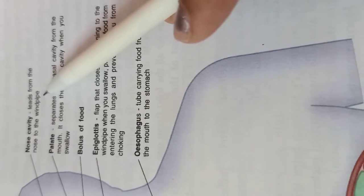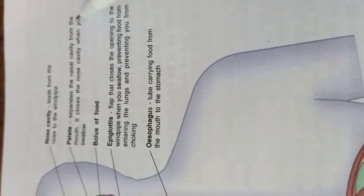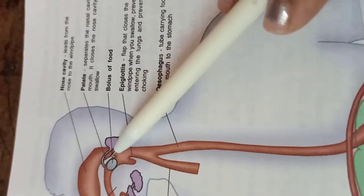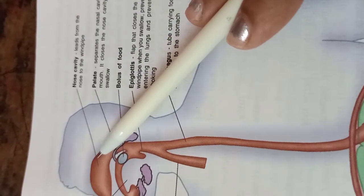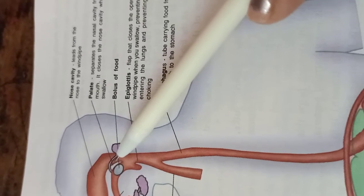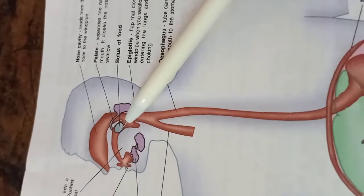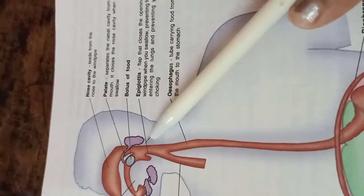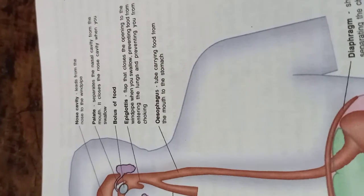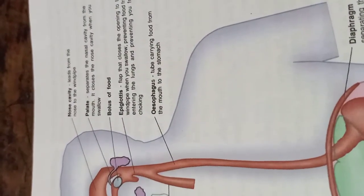The nasal cavity is connected from the nose to the windpipe and is responsible for inhaling air. The palate separates the nasal cavity from the mouth and closes the nasal cavity when you swallow. The bolus is the small rounded mass of food. The epiglottis is a flap that closes the opening to the windpipe when you swallow, preventing food from entering the lungs and preventing choking.